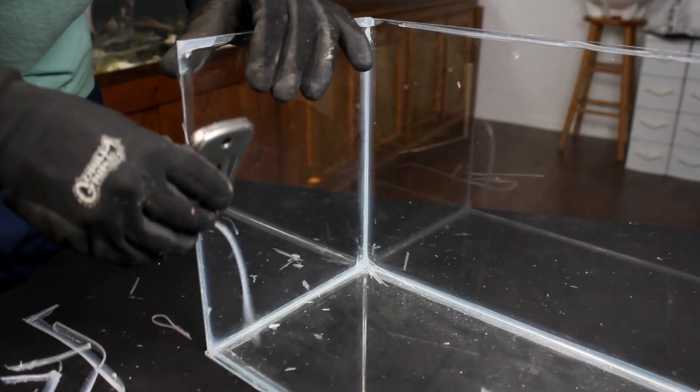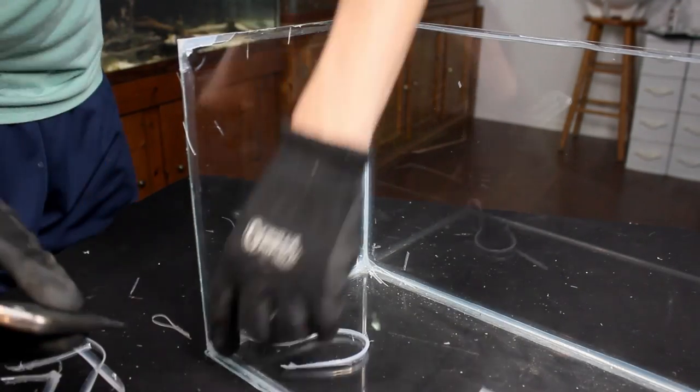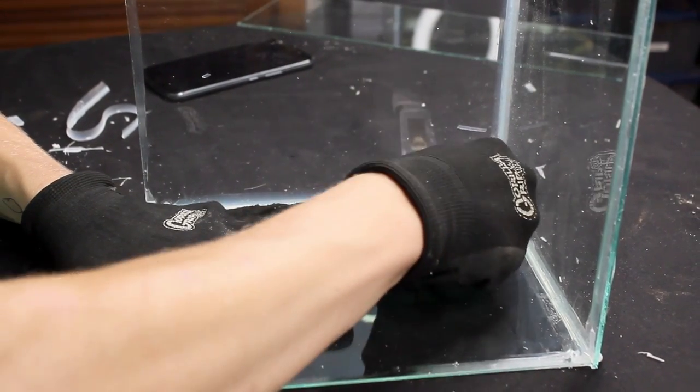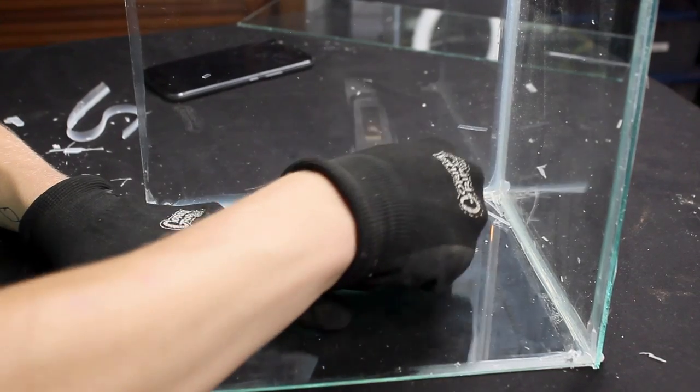We can't do anything else before removing the old silicone so that's what we'll do next. Using the razor scraper I made sure to remove any remnants of the seam. Applying new silicone over top of old silicone doesn't create a good seal so it's best to remove everything and start from scratch.